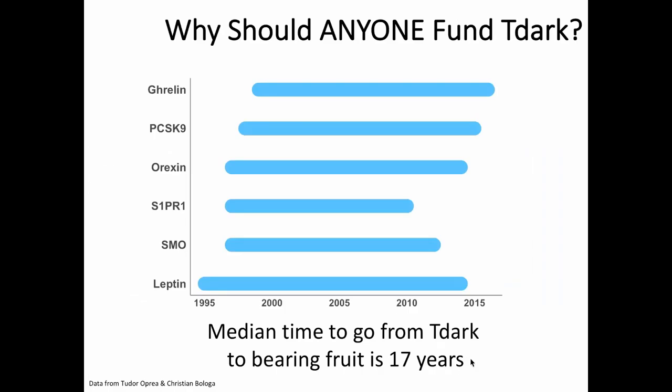Another motivation to develop the KMC and Pharos is the question: why should anyone fund TDar targets? This figure from Tudor Oprea's group shows bars where each corresponds to a target — on the left the date of first publication, on the right the date of drug approval or Phase III clinical trial. The key take-home point is that it takes a median of 17 years to go from TDar, where very little is known, to something actually useful clinically. Being able to shed light on targets allows us to hope we can reduce this timeline.